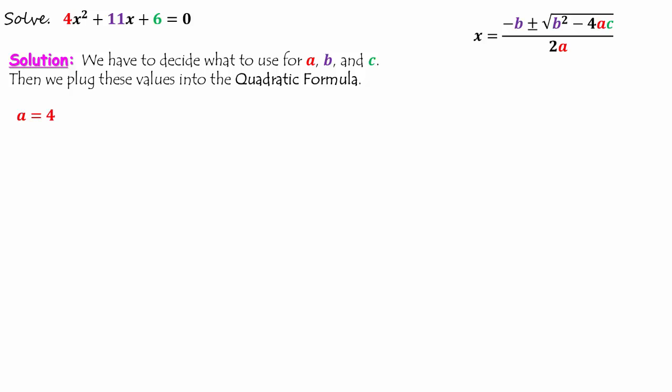a should be the coefficient of x squared, which for this equation is 4. b is the coefficient of x, which for this equation is 11. c is the constant term, which is 6.